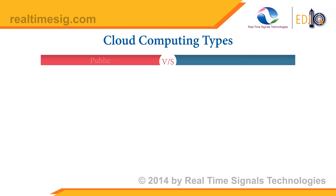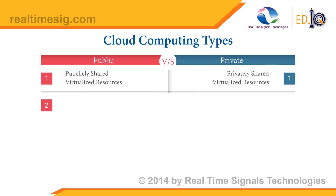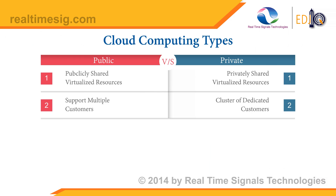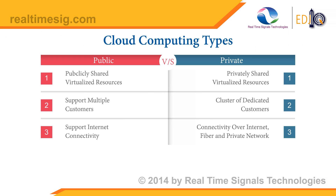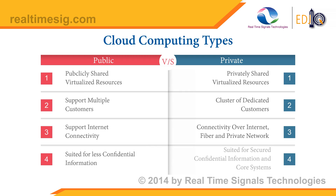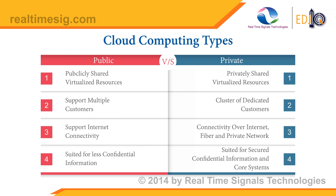There are two types of cloud computing. The first one is public cloud — it is for public access, anyone can access it and it is based on pricing factor. And the second one is private cloud — it is for personal access and cannot be accessed by anyone. For example, the Facebook database is kept in its private cloud.